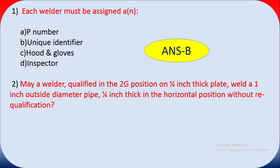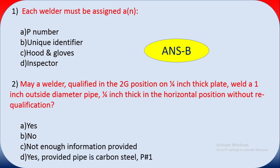Question two: may a welder qualified in the 2G position on one-fourth inch thick plate weld a one-inch outside diameter, five one-fourth inch thick pipe in the horizontal position without additional qualification? No, it cannot be possible. In the horizontal position without the qualified position, you cannot qualify for the 2G position on one-fourth inch thick plate. The answer is B — no.